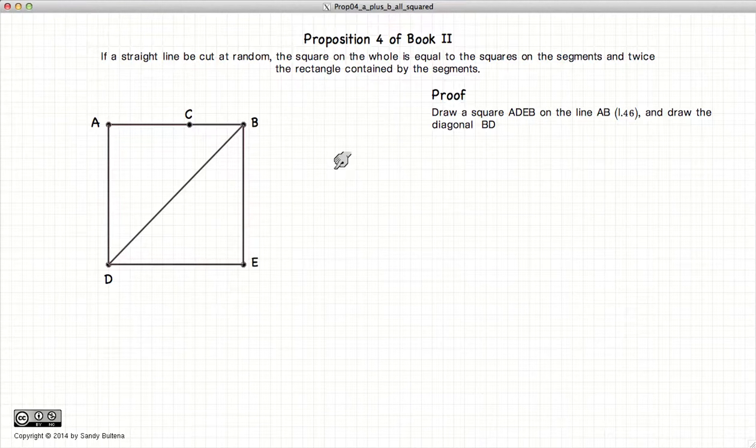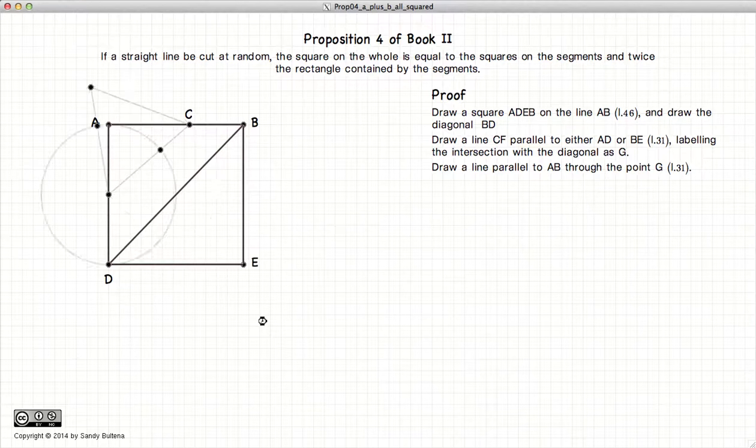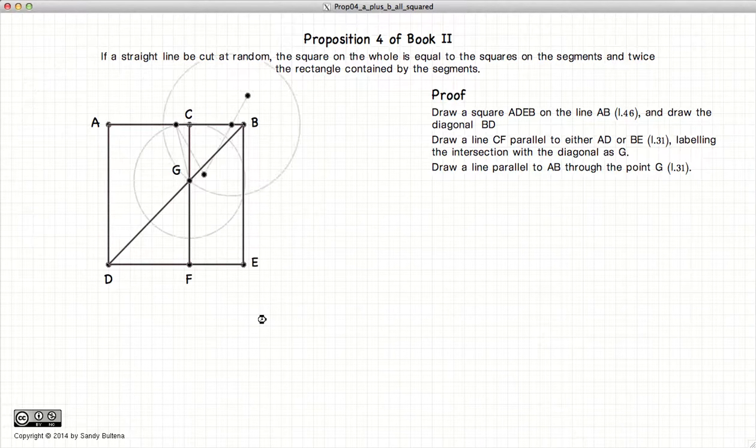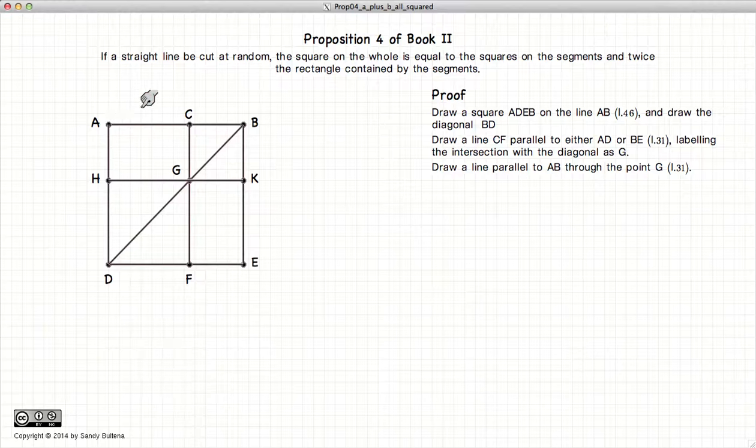First, we draw our square on AB. From C, we draw a line parallel to the sides, labeling the intersection point with the diagonal as G. Through G, we draw another line parallel to AB and label those intersection points.